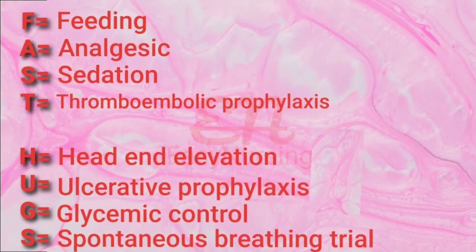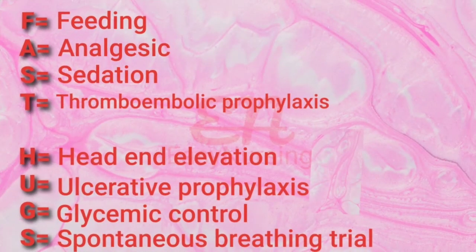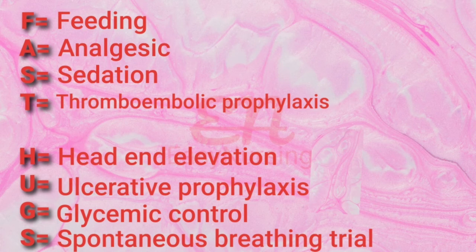T denotes thrombolic prophylaxis, that is the use of a DVT pump, heparin, or clexane. H denotes head elevation. U is ulcerative prophylaxis. G is glycemia control. S is supplemental oxygen or spontaneous breathing trial.